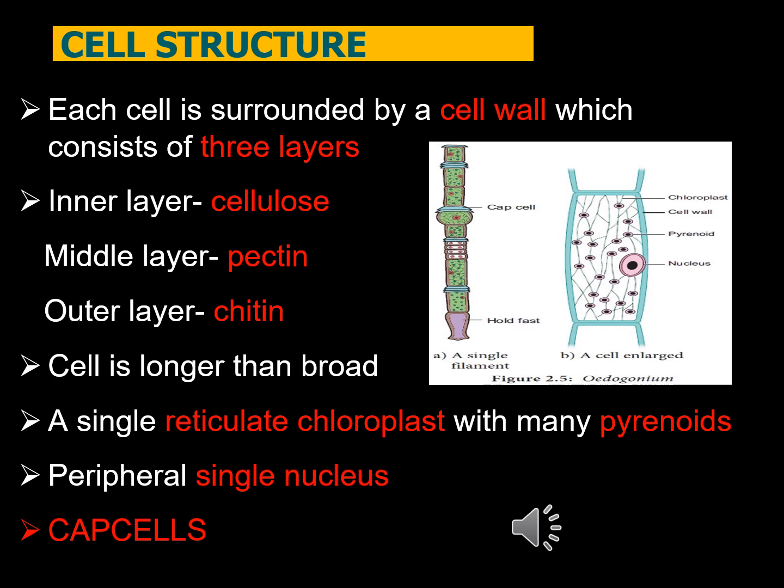The single nucleus of Oedogonium is peripheral, meaning it is not centrally located. Some of the middle cells have apical caps, and these cells are known as cap cells.